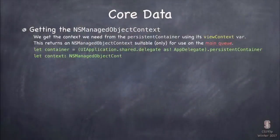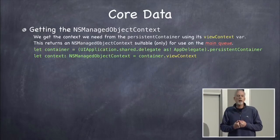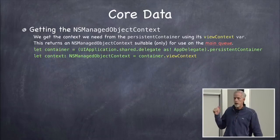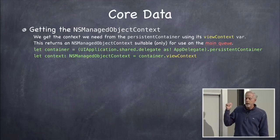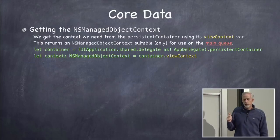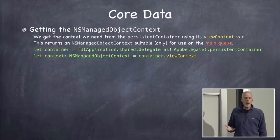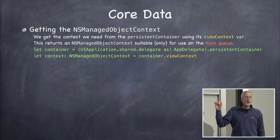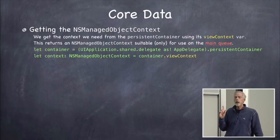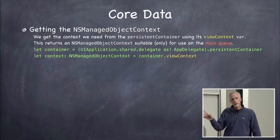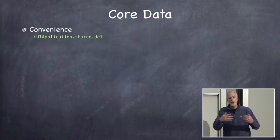Now I have this PersistentContainer and I need to get the context out of it. The container has a var called ViewContext, and ViewContext is an NSManagedObjectContext that's only suitable for use on the main queue. Whenever you see anything in red on my slides, pay attention — it will matter for your homework and in life. You can only use this ViewContext on the main queue. It's called ViewContext because you use it with your views, your UIView. NSManagedObjectContext is not thread safe, but we'll talk about multi-threaded database stuff towards the end of this talk.